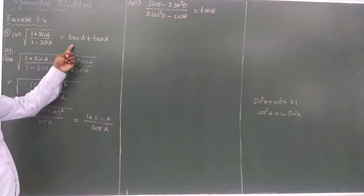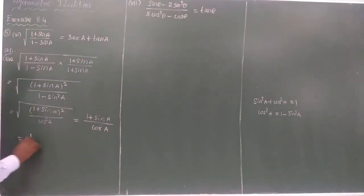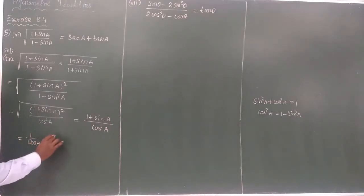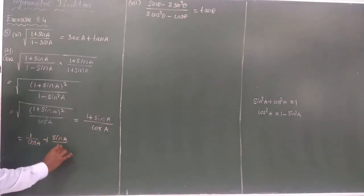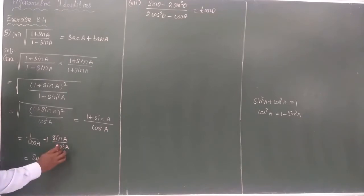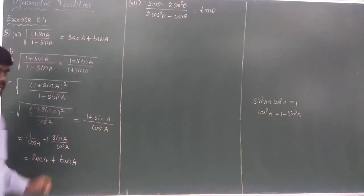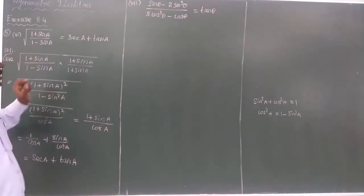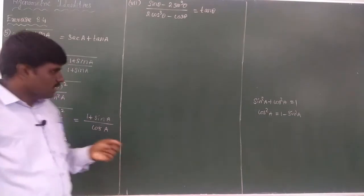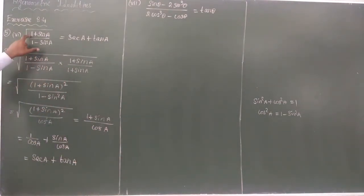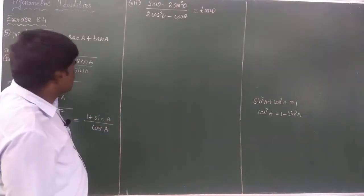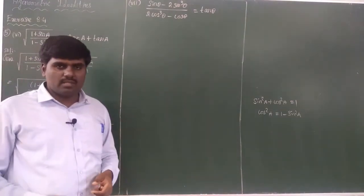Now divide individually: 1 by cosA plus sinA by cosA. We know that 1/cosA equals secA, and sinA/cosA equals tanA. Therefore, the square root of (1 + sinA)/(1 - sinA) equals secA plus tanA. Similarly, (1 + cosA)/(1 - cosA) or (1 - sinA)/(1 + sinA) give similar results. These variants are available in the exercise.